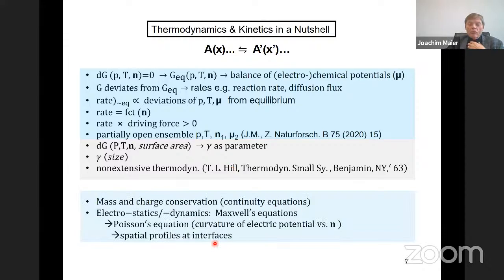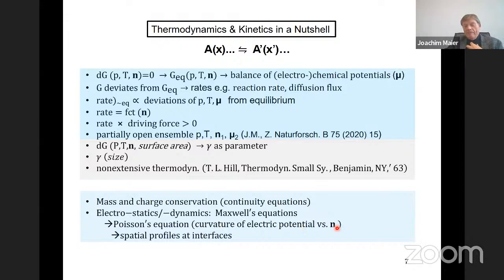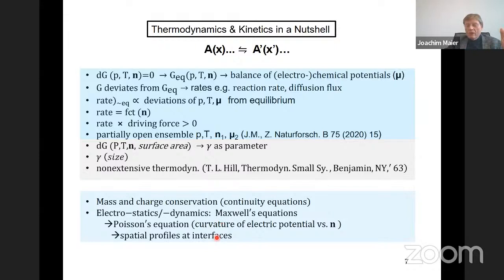We must consider constraints such as mass and charge conservation, continuity equations, and from electrostatics, Maxwell's equations. Since we are not dealing with magnetic fields, we just deal with Poisson's equation, which gives a relation between the curvature of the electric potential and the concentrations. This means we have to deal with profiles when we are at interfaces.